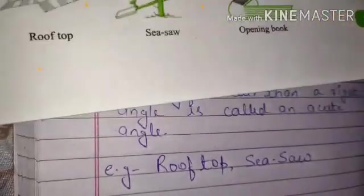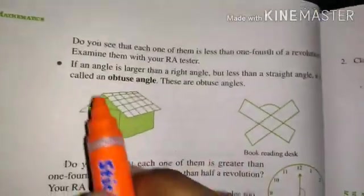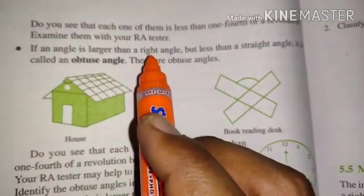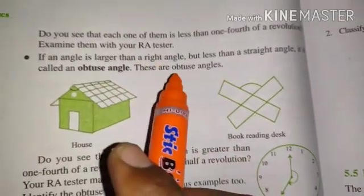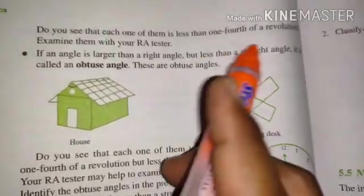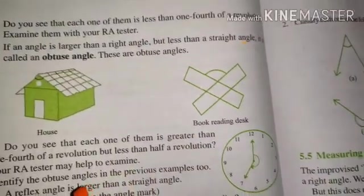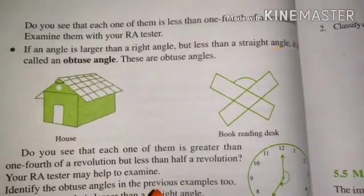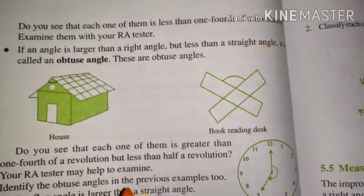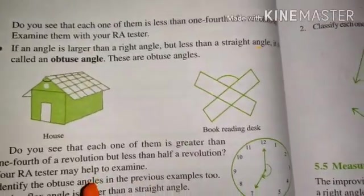Ab baat karein ge, next is obtuse angle. So bachon, obtuse angle mein, humara, if an angle is larger than right angle, jab humara angle 90 degree se zyada hota hai, but less than straight angle. Straight angle kitne degree ka hota hai? 180. Yarni ki, 90 to 180 ke between, jo bhi angles honge, between, woh hamare obtuse angle honge.